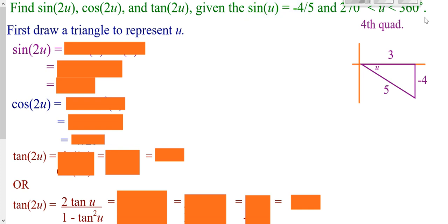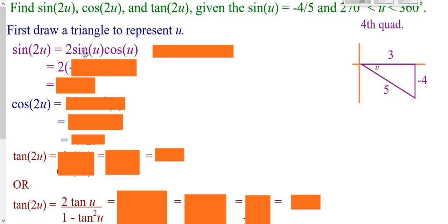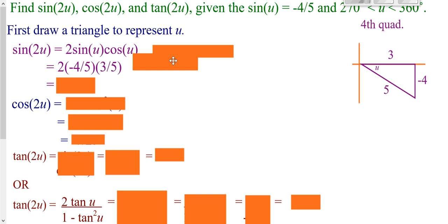We're also told that we are in the fourth quadrant, so I'm going to draw an angle in the fourth quadrant. Sine is opposite over hypotenuse, so it's negative 4 over 5. I use the Pythagorean theorem to get my missing side and draw our triangle to represent our angle. My double angle sine is 2 times sine of u times cosine of u. So I go 2 times sine of u — opposite over hypotenuse — times cosine of u — adjacent over hypotenuse — and then multiply the fractions together.